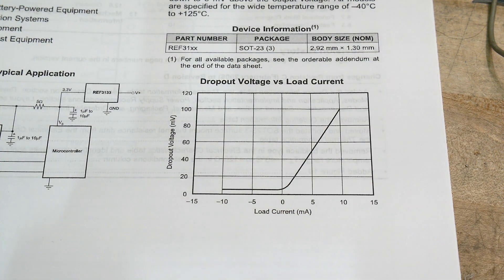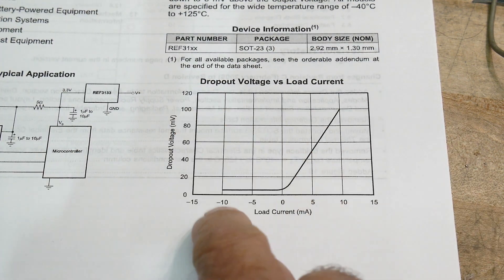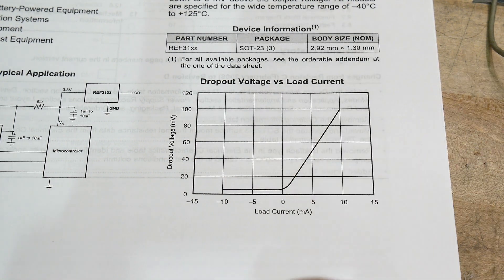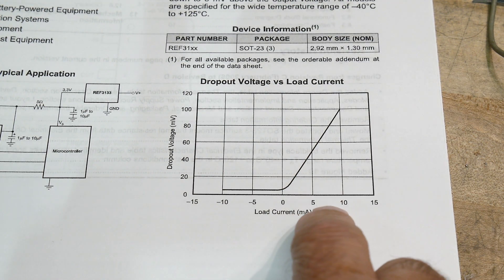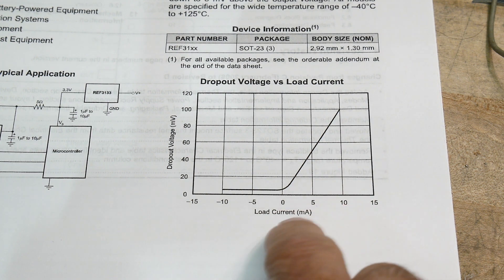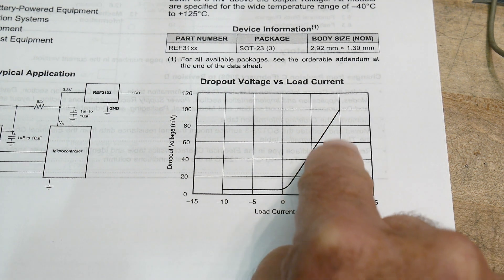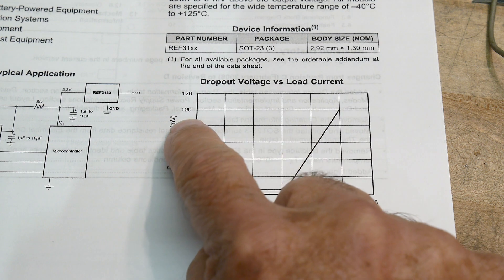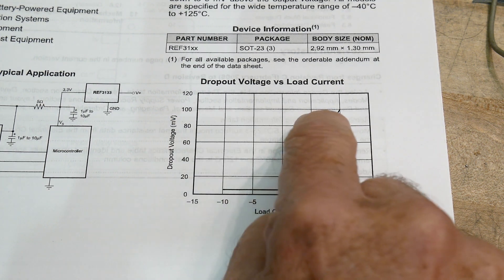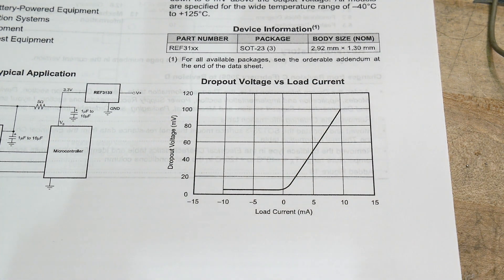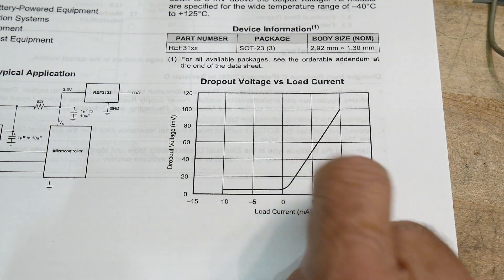It is plus or minus as well. It'll sink and source current. That's just crazy. But anyway, here at plus 10 milliamps, it is a dropout of 100 millivolts. So super, super low dropout. But yeah, we're going to be operating it down here.